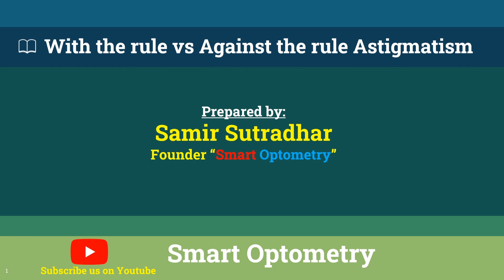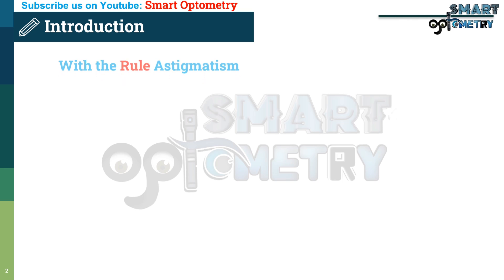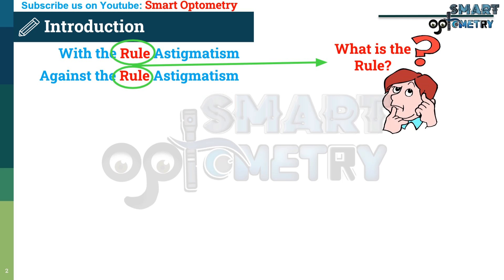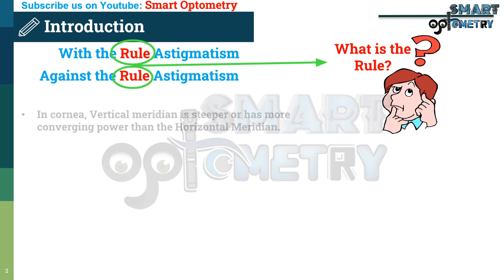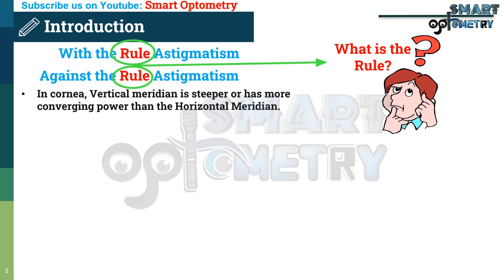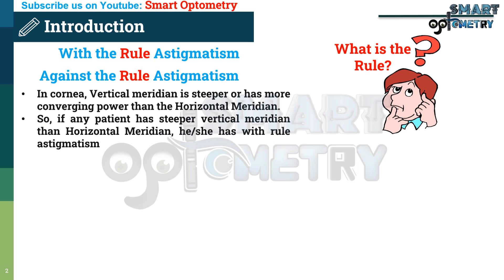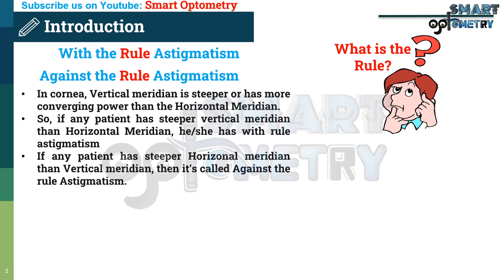Today I will discuss with the rule versus against the rule astigmatism. The rule is that in the cornea, the vertical meridian is steeper or has more converging power than the horizontal meridian. So if any patient has a steeper vertical meridian than horizontal meridian, they have with the rule astigmatism. And if any patient has a steeper horizontal meridian than vertical meridian, then it is called against the rule astigmatism.